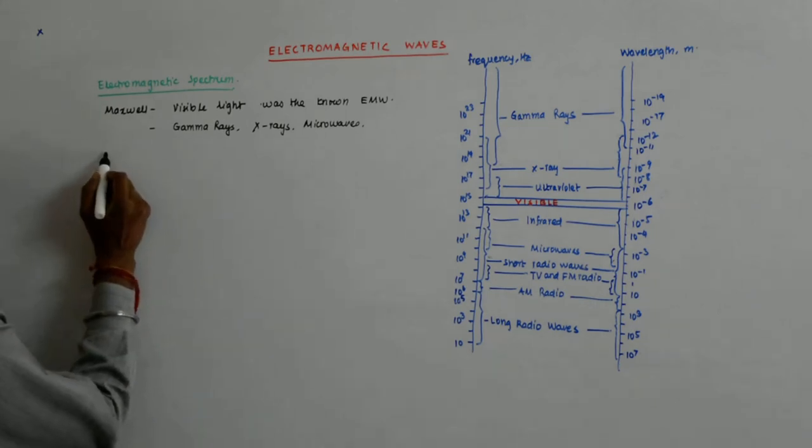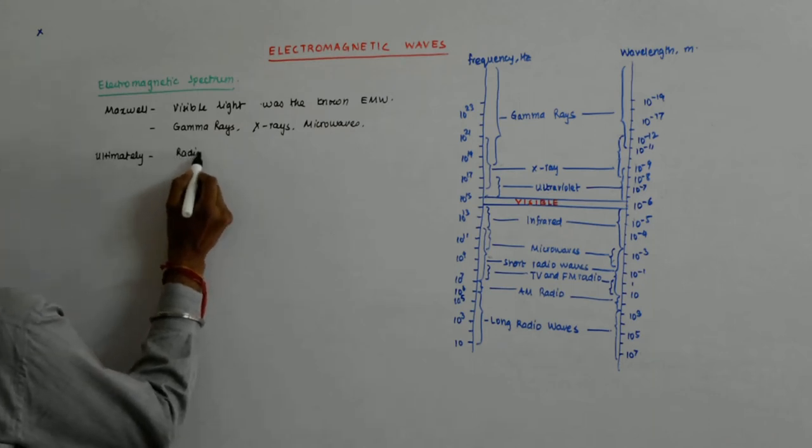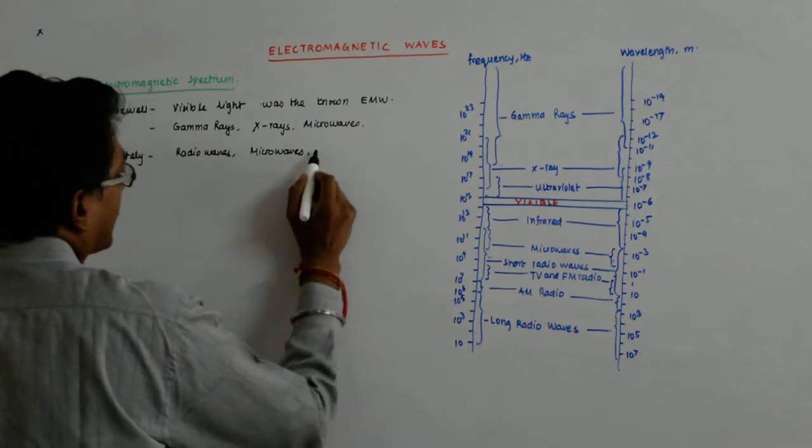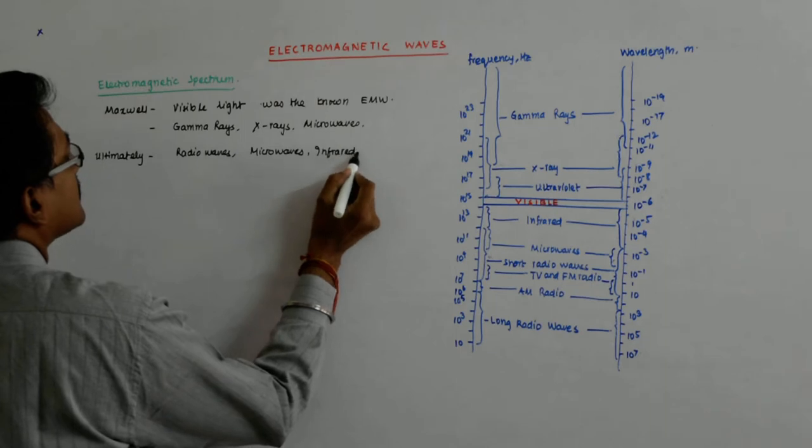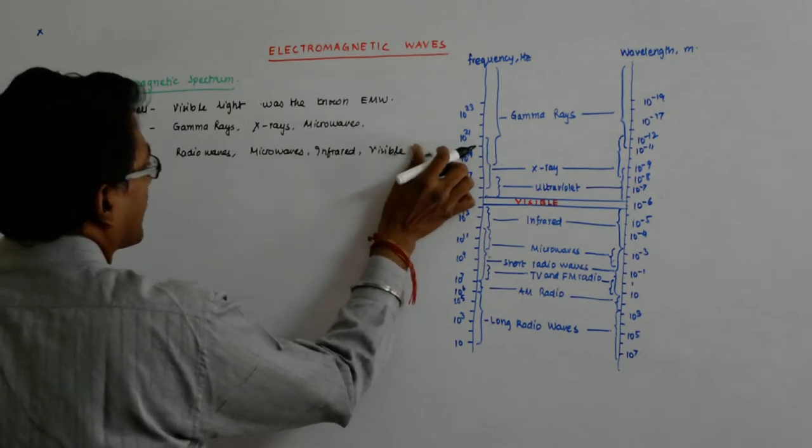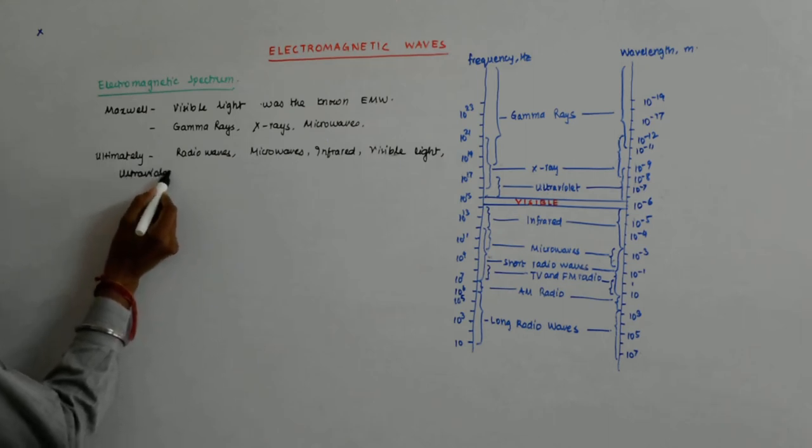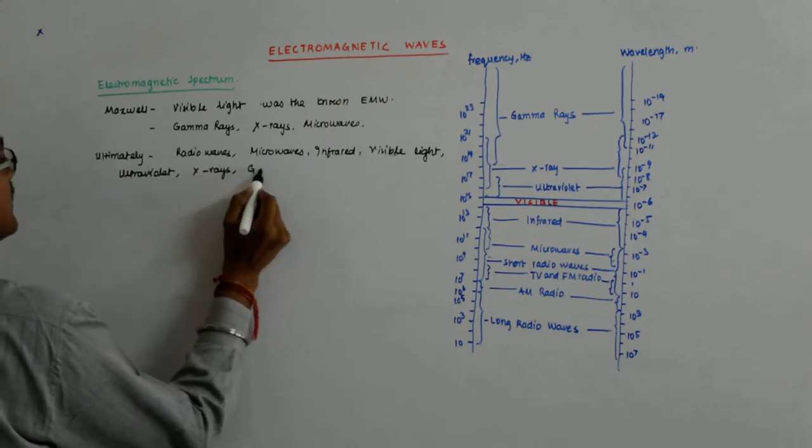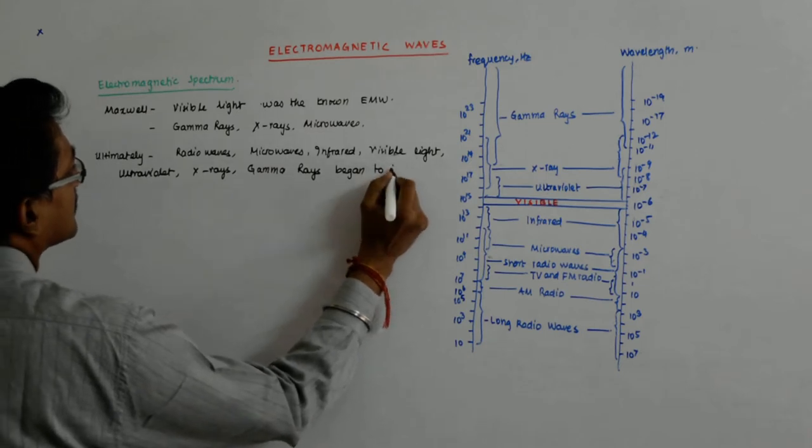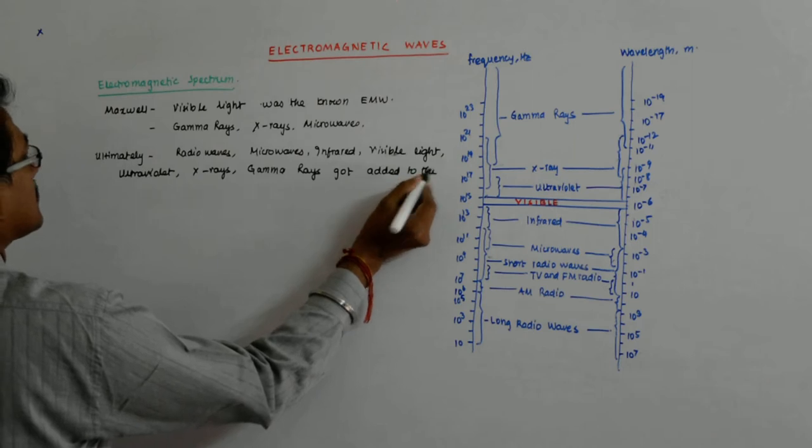So later it turned out that the radio waves, the microwaves, the infrared, visible light visible to human beings, ultraviolet, x-rays, gamma rays, got added to the spectrum.